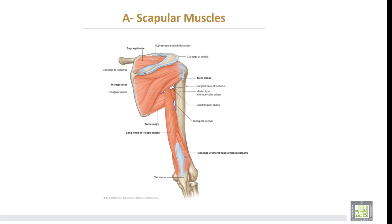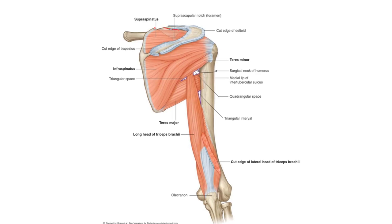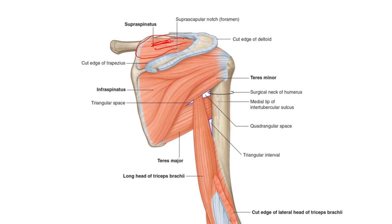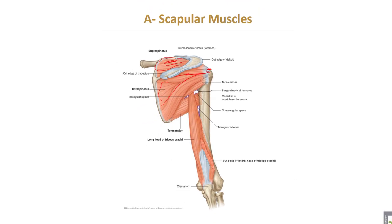This is the supraspinatus muscle, which takes origin from the supraspinous fossa and is inserted into the top of the greater tuberosity of the humerus. The second is the infraspinatus muscle, which takes origin from the infraspinous fossa and is inserted into the facet behind the insertion of the supraspinatus muscle, also on the greater tuberosity of the humerus.